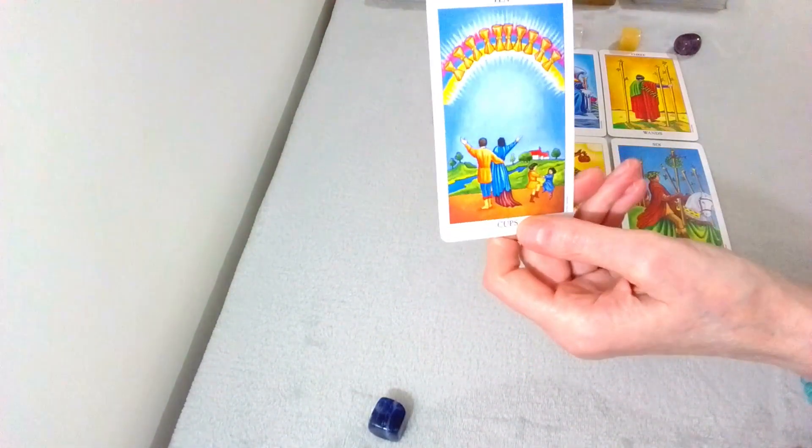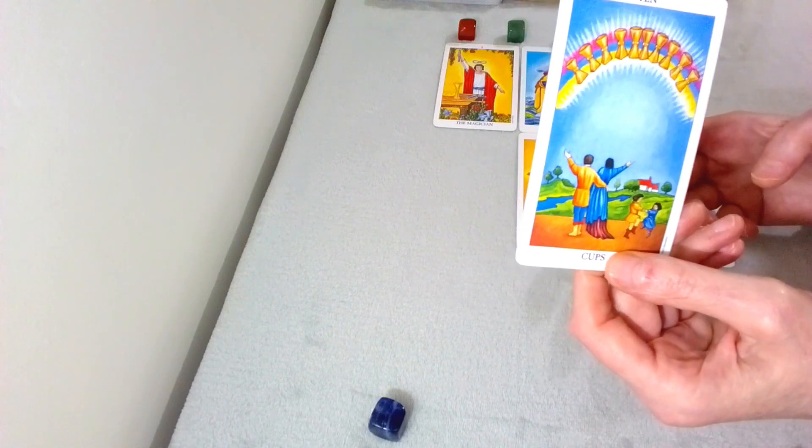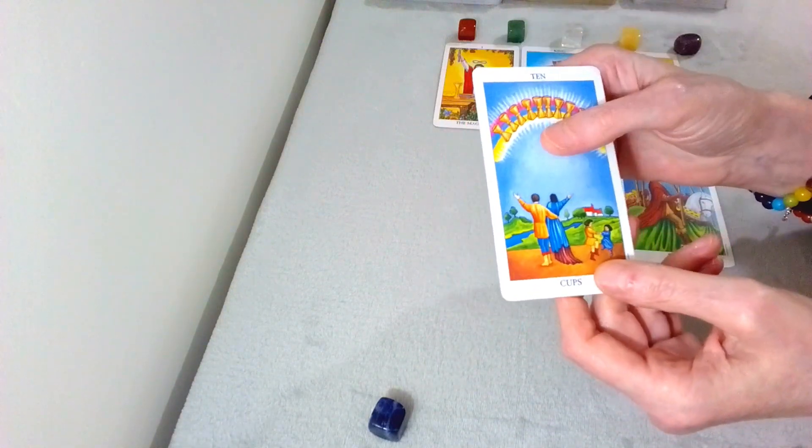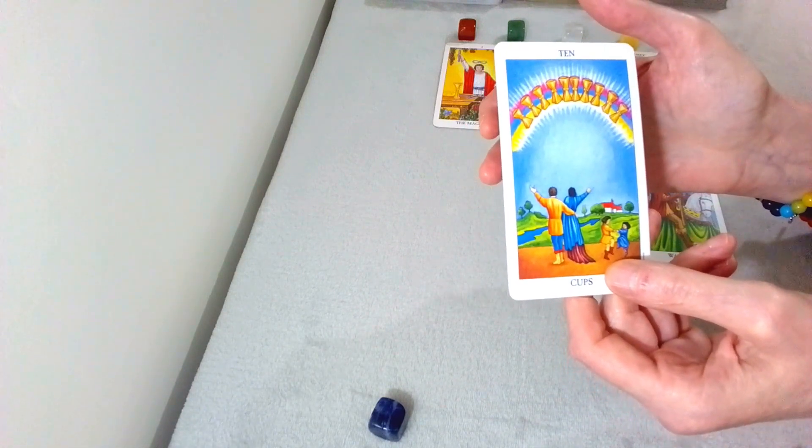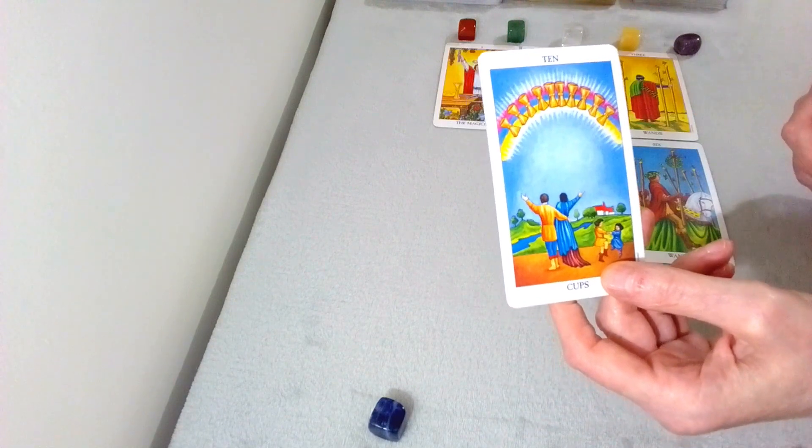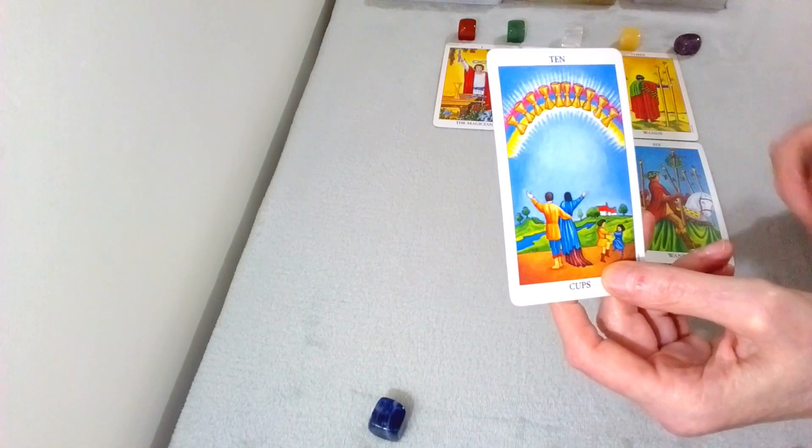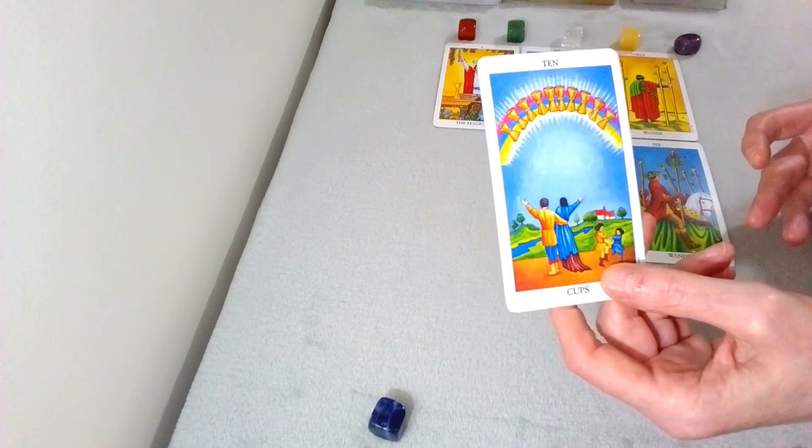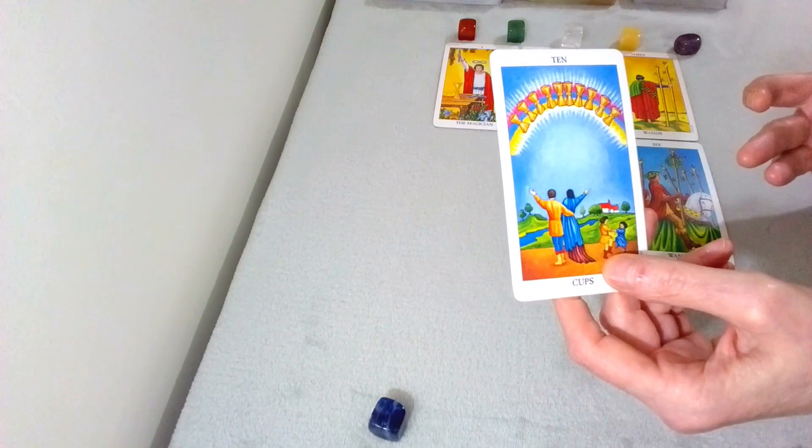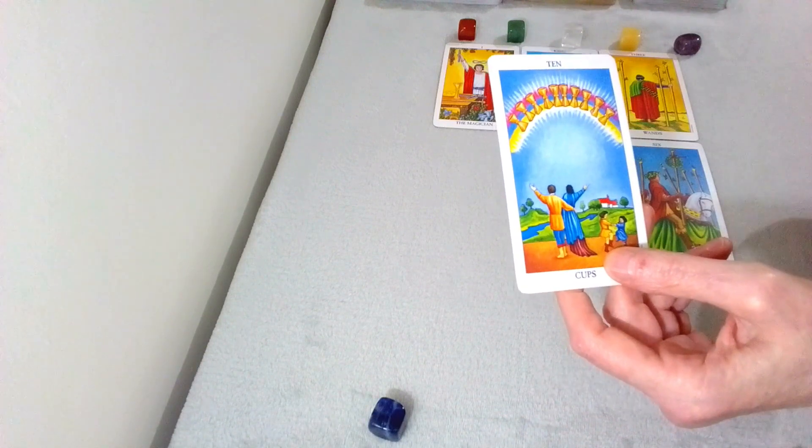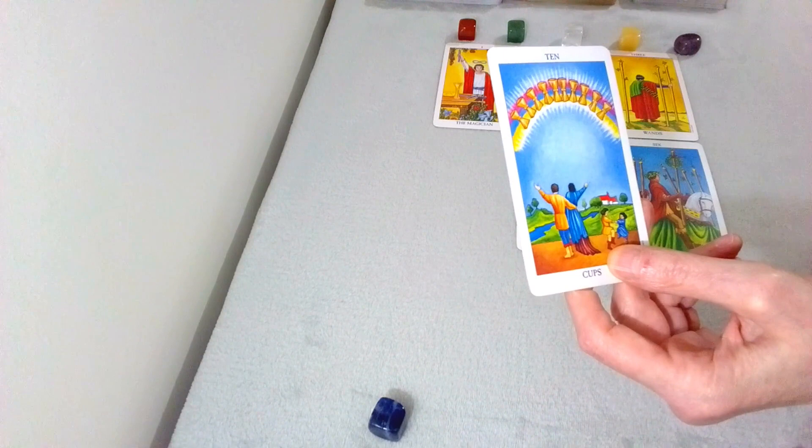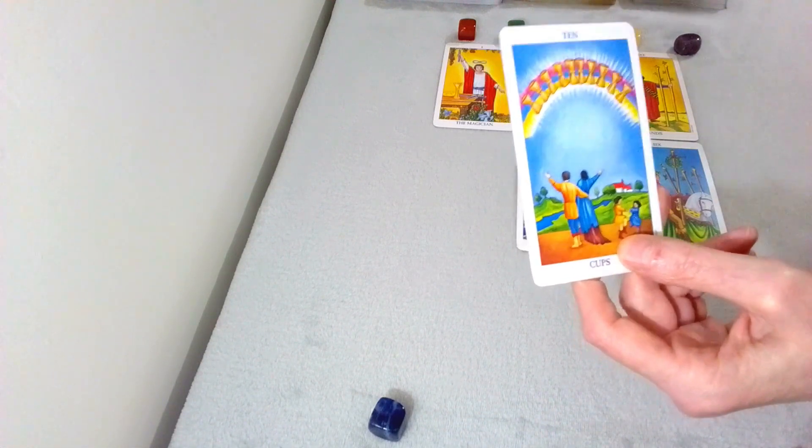This is the Ten of Cups. This is happiness. This is being self-fulfilled. Complete joy, happiness, abundance coming in. There could be, some of you could be getting married, or your relationship could be ascending to a higher level of commitment. This is about wishes coming true. This is about also attaining some sort of achievement as well.